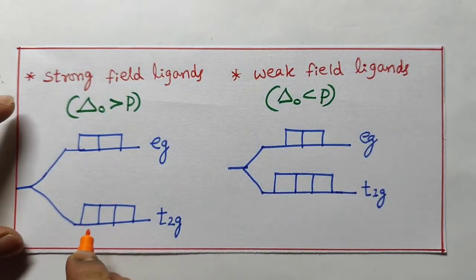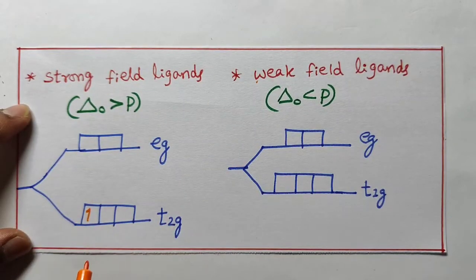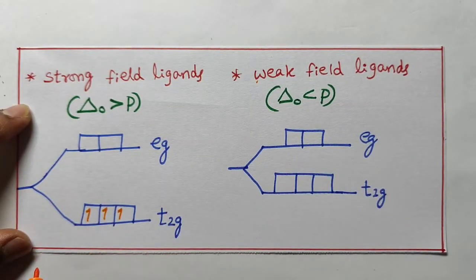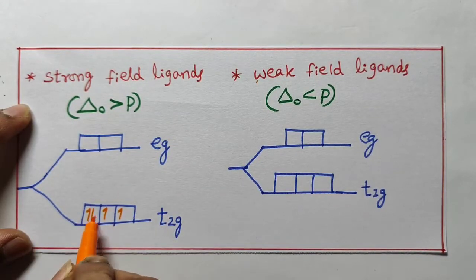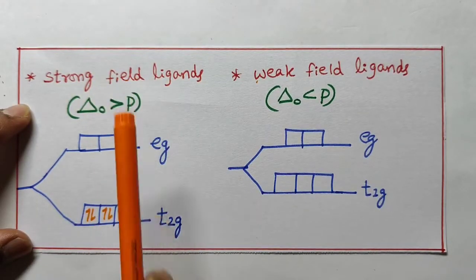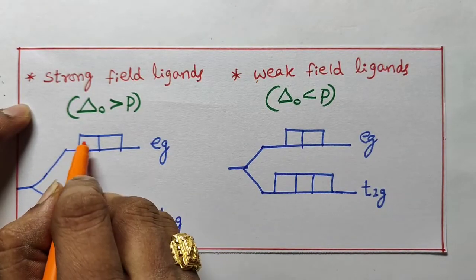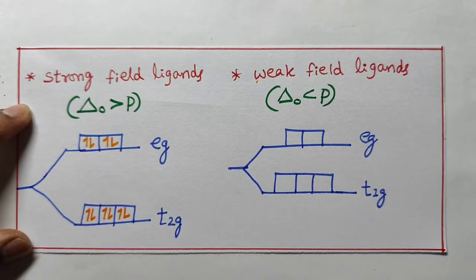For example, one electron is there in presence of a strong field ligand. Two electrons, three electrons — and when four electrons are there, energy difference is more, that's why the fourth electron again enters into t2g. Fifth electron, sixth electron like this. In presence of strong field ligands, first t2g is completely filled, then seven, eight, nine, ten.